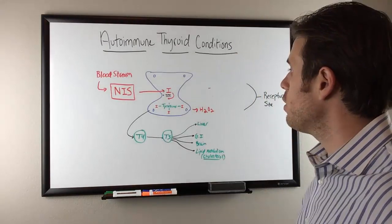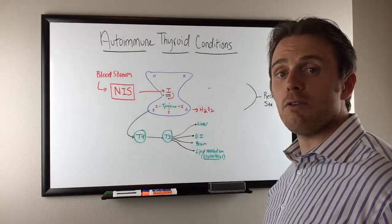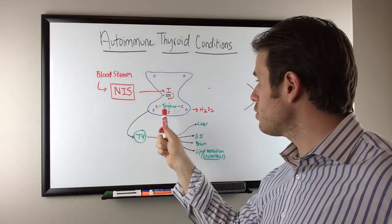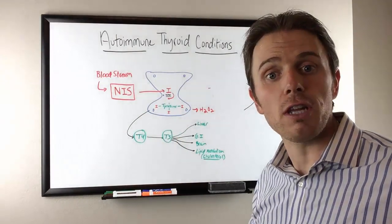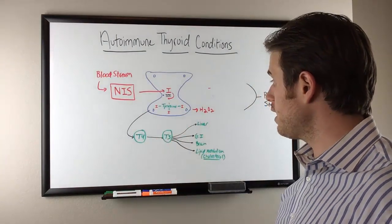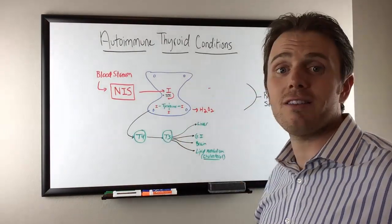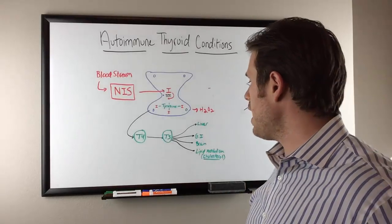So what's happening here? This is T4. This is our tyrosine attached to four iodine molecules. T4 comes out and converts peripherally to T3, outside of the thyroid tissue. And T3 has effects in the liver and the GI, the brain and cholesterol metabolism.